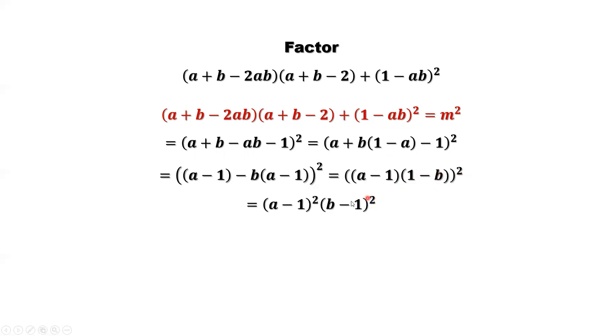So because that's square, we can switch the order. b minus 1 looks nicer. So this is the final answer. In summary, how to factor this? This is our result. a minus 1 square times b minus 1 square.